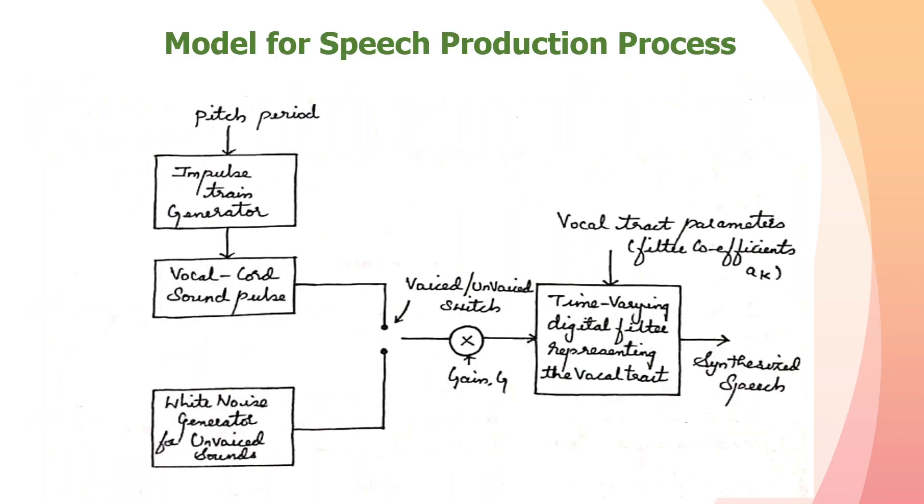This slide shows the model for speech production process. How speech is produced is by excitation of vocal cords. If vocal cords get excited with an impulse train, then a voiced sound will be generated. If the vocal cords are excited with white noise, then an unvoiced signal will be generated.